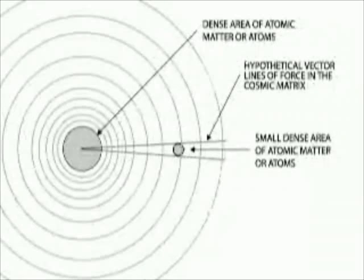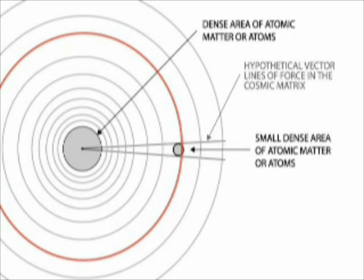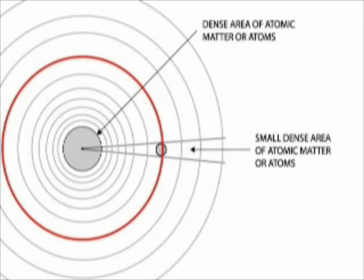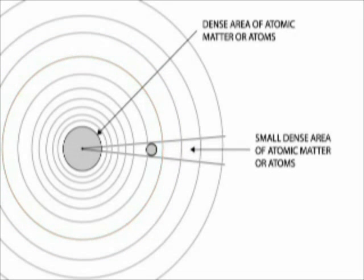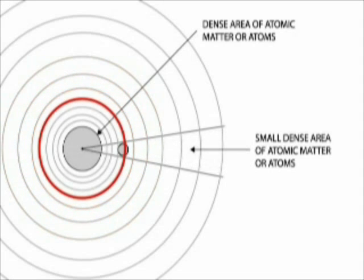The first diagram shows a large mass of atomic matter displacing more VS1s than the small atomic mass. There are more VS1s rebounding along the hypothetical vector lines than VS1s rebounding randomly without atomic mass present. The larger the mass, the greater the displacement of VS1s. The closer this small mass gets to the large mass, the more VS1s are rebounding along the vector lines of force, in other words, the basis for the inverse square law.